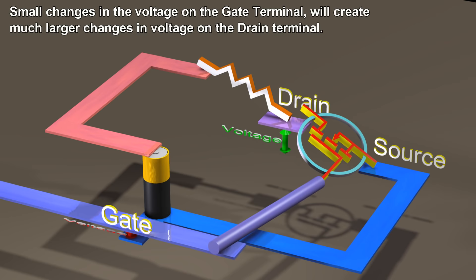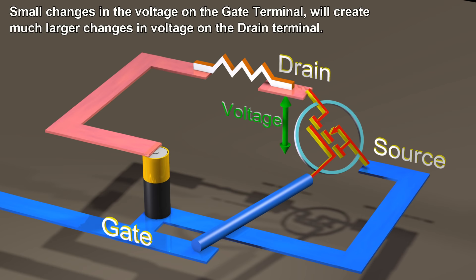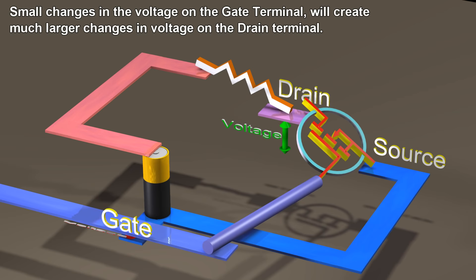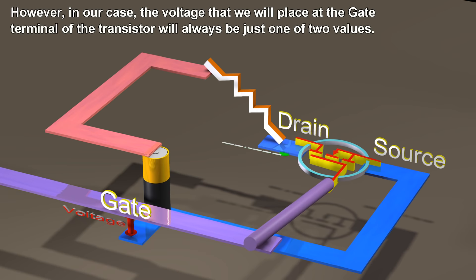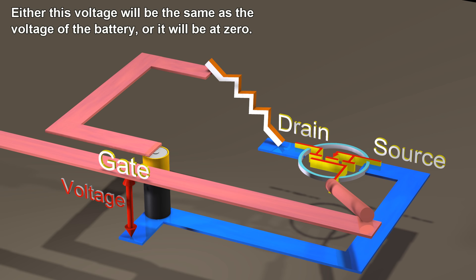If we apply a voltage to the gate terminal, it will create much larger changes in voltage on the drain terminal. However, in our case, the voltage that we will place at the gate terminal of the transistor will always be just one of two values: either this voltage will be the same as the voltage of the battery, or it will be at zero.